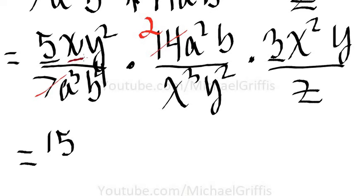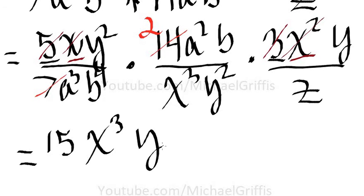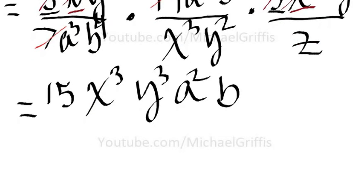We have an x and an x squared, so we multiply them together. Remember, we add their exponents, so that becomes x to the third power. We have a y squared and a y, so that becomes y to the third power. We have an a squared and a b.